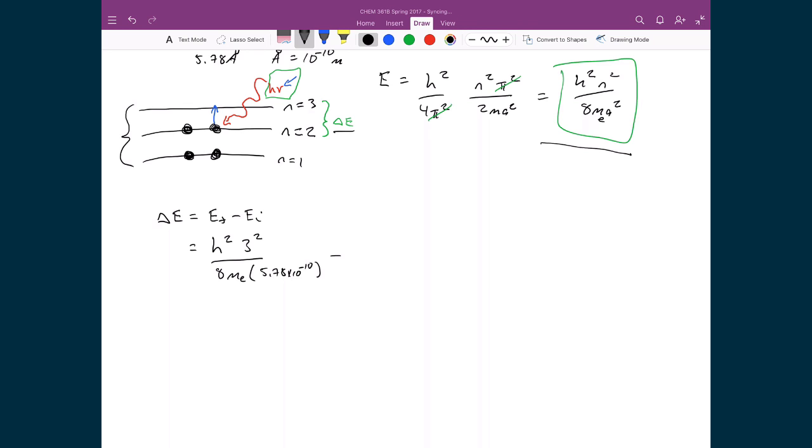And from that I'm going to subtract off the energy from the initial state, and the initial state is the n is equal to 2 energy level. So again, I'm just going to write h squared times 2 squared, all divided by 8me 5.78 times 10 to the minus 10. And sorry, I should have had squares on both of those terms.